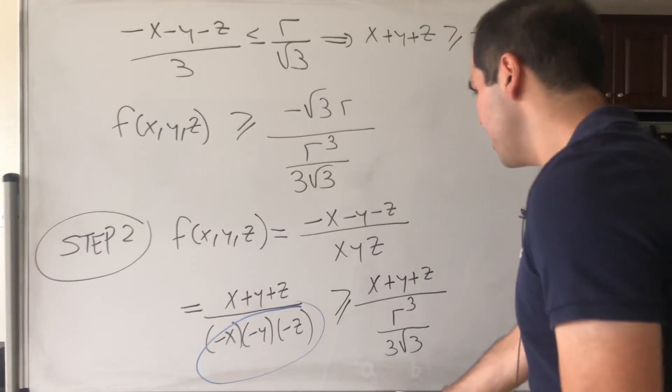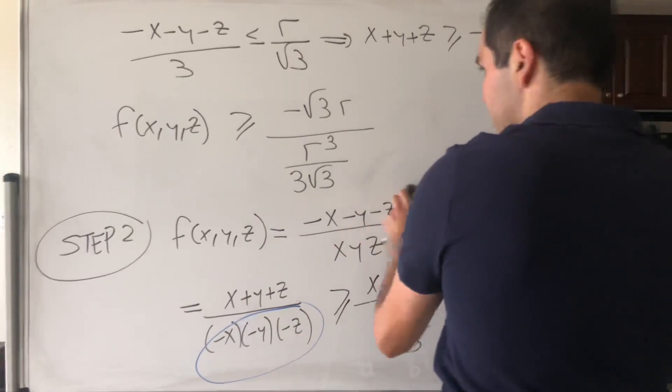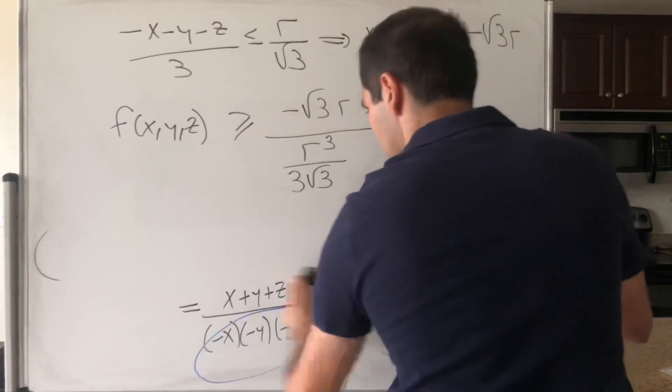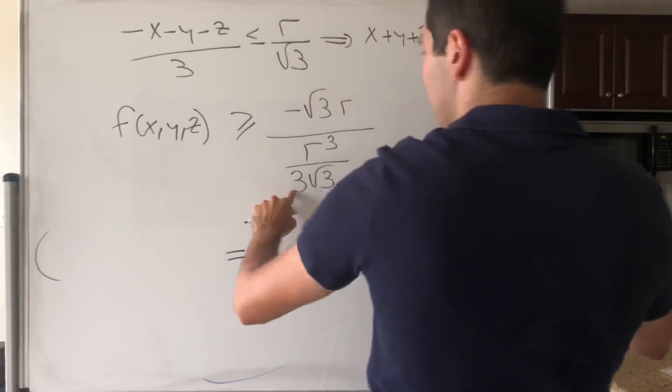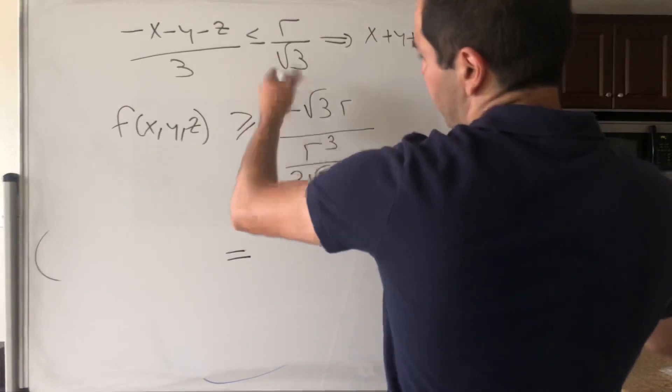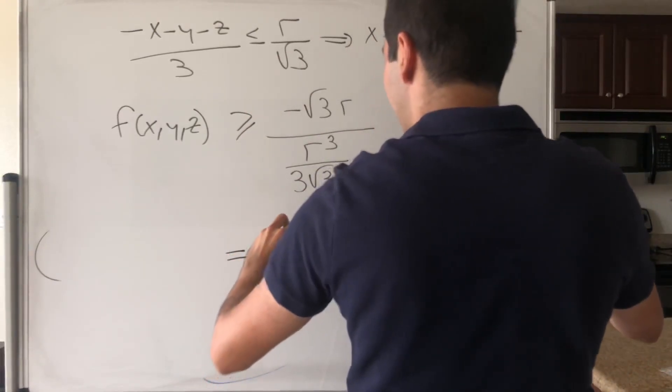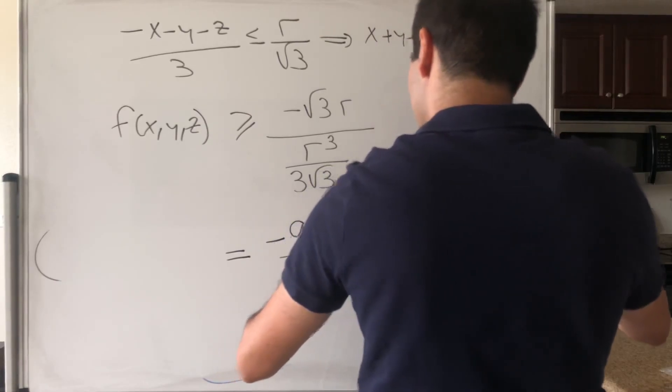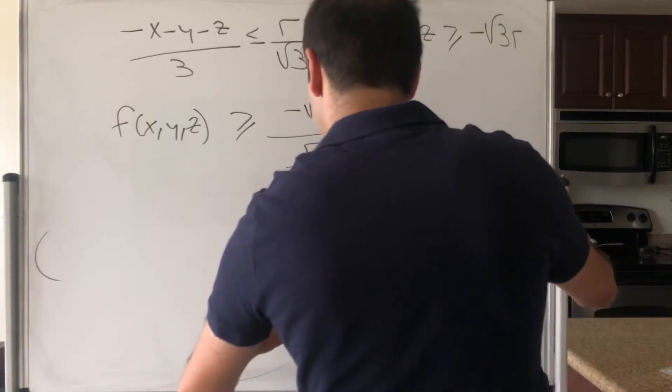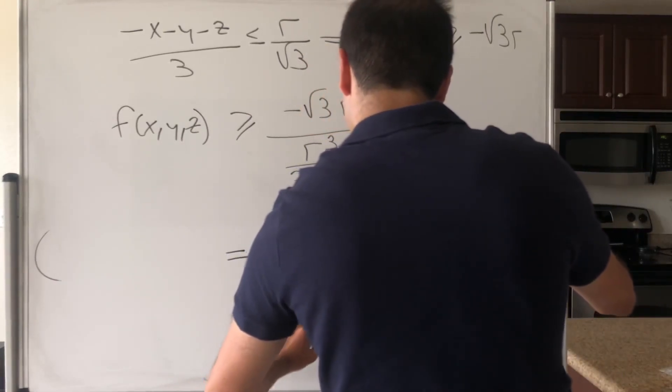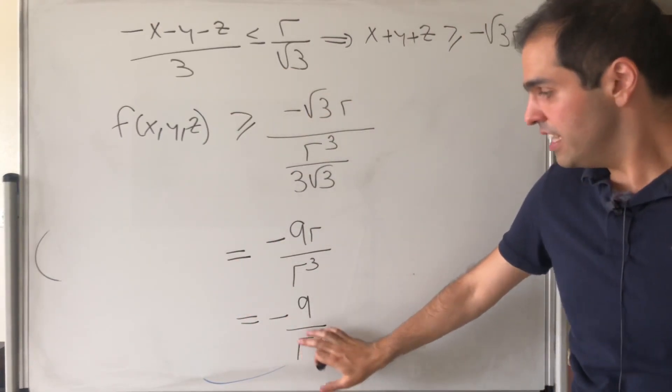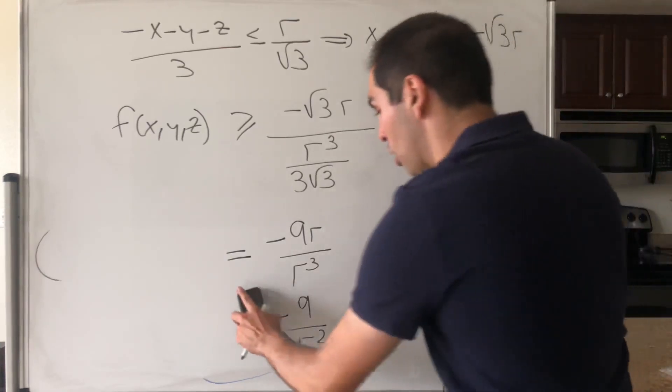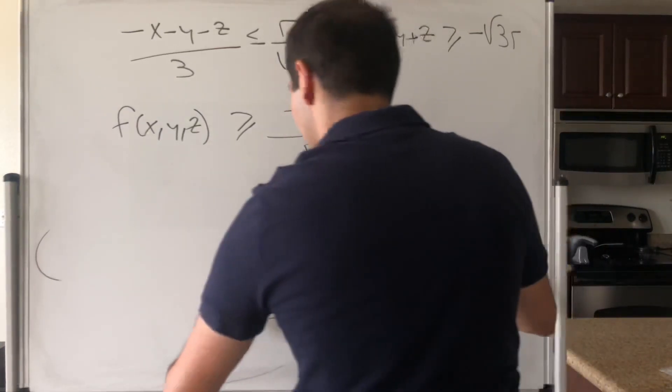But now, flipping everything, what we get in the end, this simplifies. So, again, square root of, so 3 and then square root of 3, so I think it becomes minus 9 r over r cubed, and that is minus 9 over r squared. So, the function is at least bounded below by minus 9 over r squared.